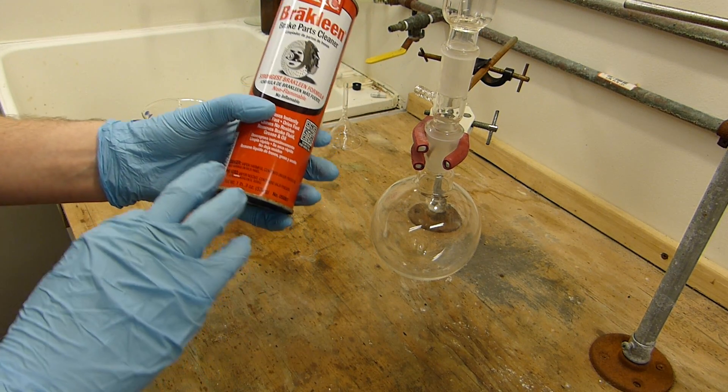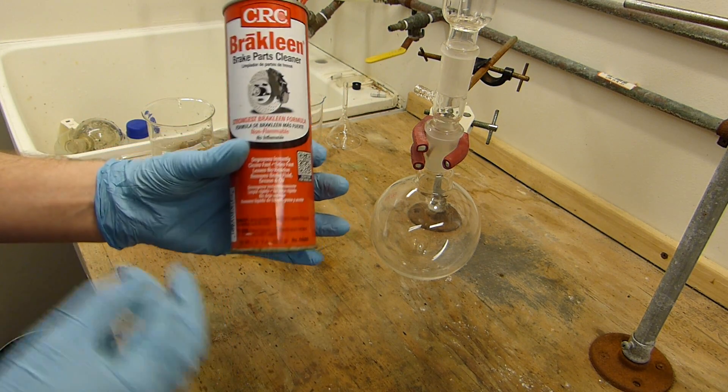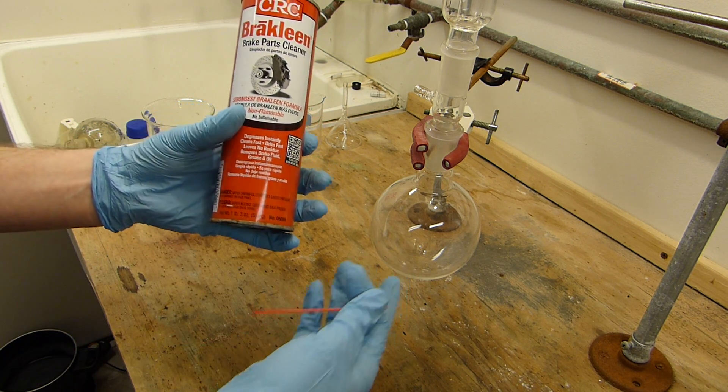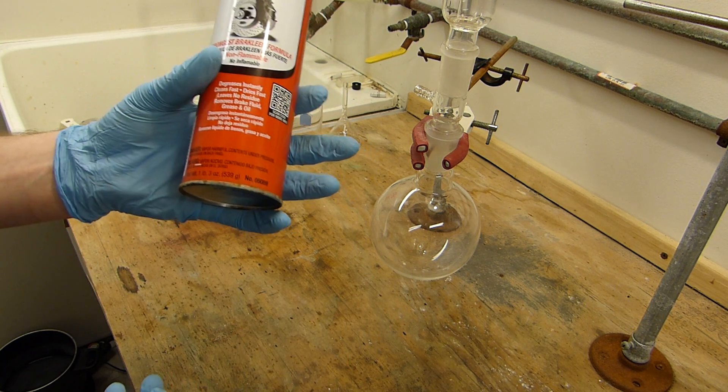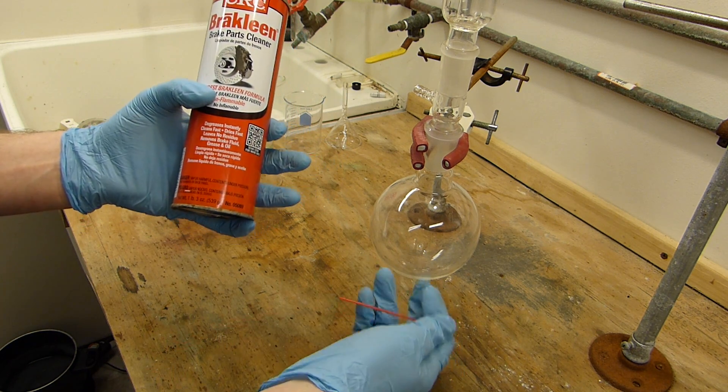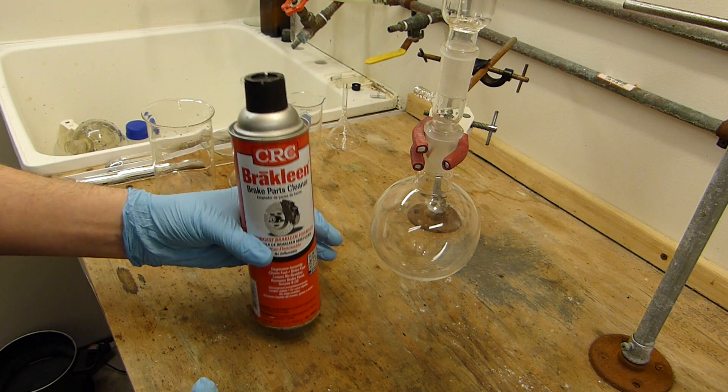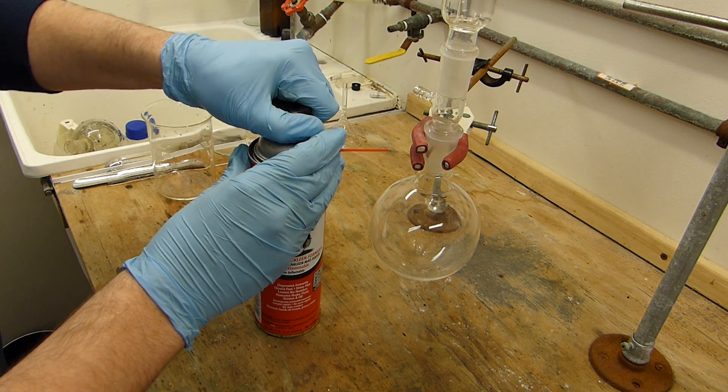All right so what I'm going to do is first I'm going to ascertain how much brake clean is in here, how much tetrachloroethylene that is. It's 539 grams, this is a 500 milliliter flask and this has a density much higher than that of water. So I'll be fine with the capacity of the 500 milliliter flask to empty this entire can.